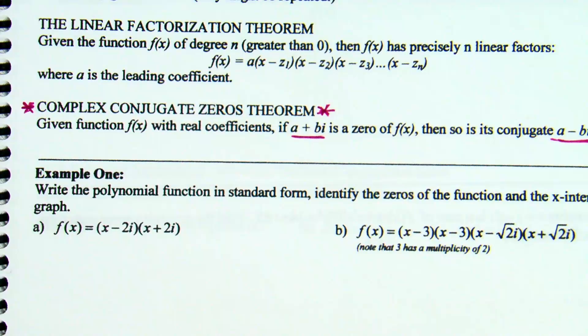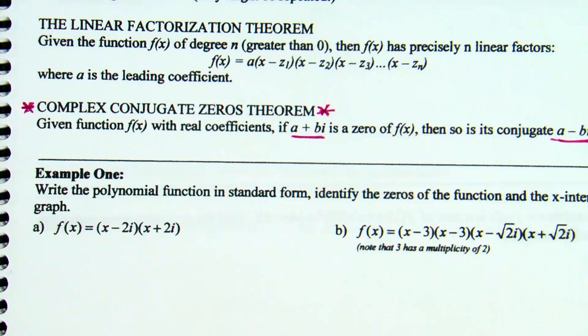Do you guys remember i? What is i? Specifically, i represents the imaginary unit, which is the square root of negative one. It allows us to have negative square roots. If i is the square root of negative one, what is i squared? Negative one — because when you square a square root, you get whatever is under the square root. So i squared is negative one. That's the information you need to know to proceed in this lesson.